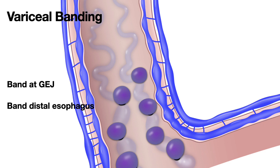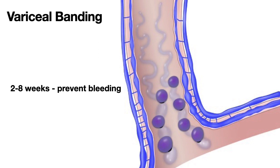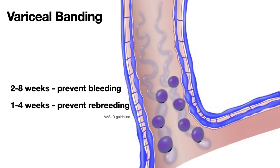There is no point placing bands in the middle or upper esophagus. For variceal banding to prevent bleeding after seeing large varices or red wale signs, the American Association for the Study of Liver Diseases recommends banding at 2 to 8 week intervals until varices are completely obliterated. If a patient presents with active bleeding that is controlled with banding, then banding at 1 to 4 week intervals until complete obliteration.